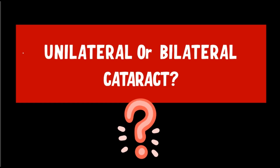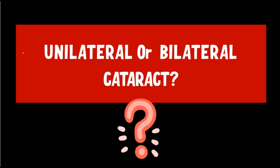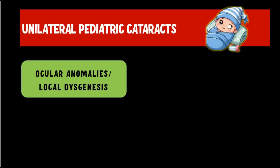Now let's get started. Studying the etiology is very important because we want to avoid amblyopia. Before we start, it's important to make a distinction whether the child has a unilateral cataract or whether the cataract involves both eyes, which is called a bilateral cataract.